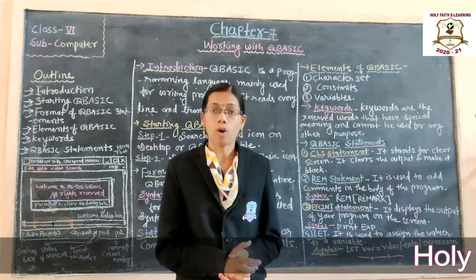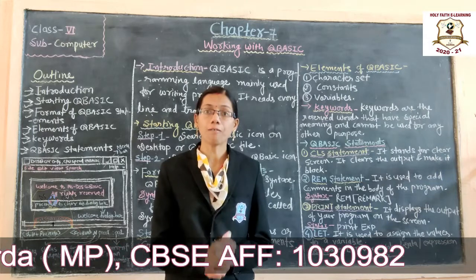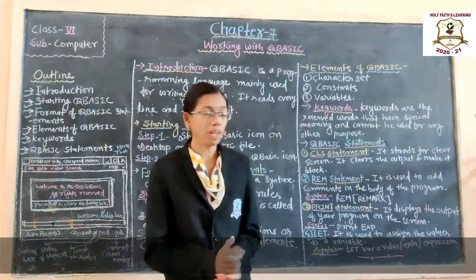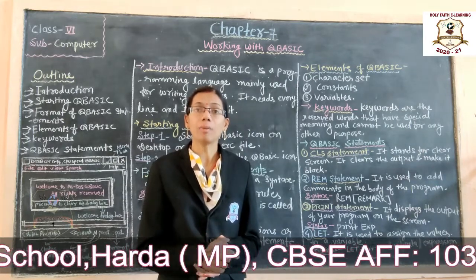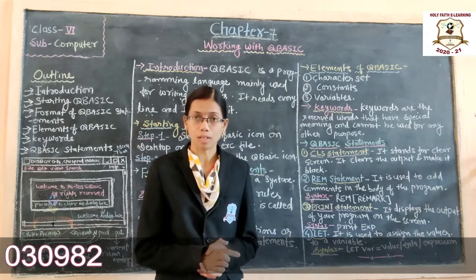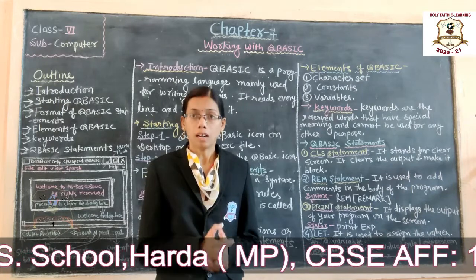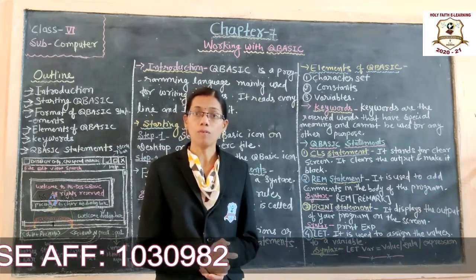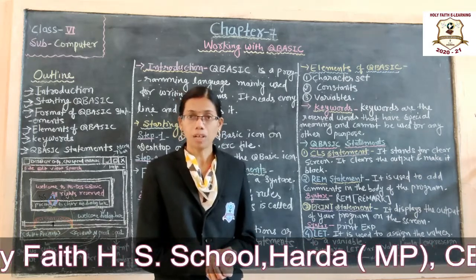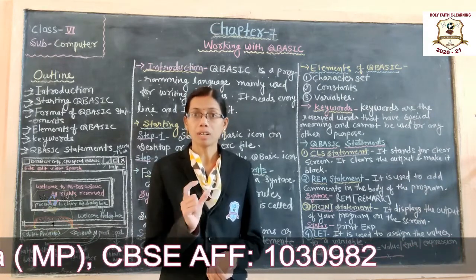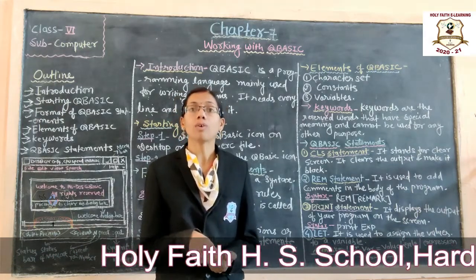Values that cannot be changed or are fixed are known as constants. Constants are values that remain fixed during program execution. Constants are of two types: numeric constants and alphanumeric constants. Alphanumeric means a mixture of alphabets and numbers — for example, writing 'Computer123' is a combination of alphabets and numbers, so that is alphanumeric.